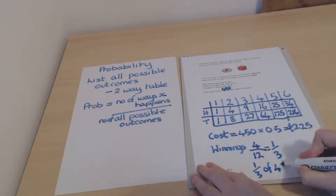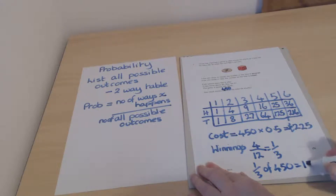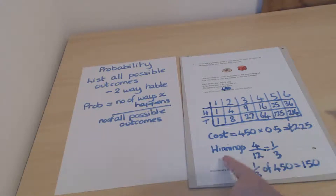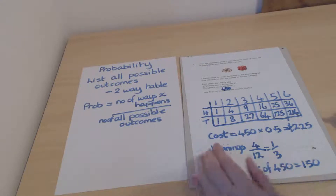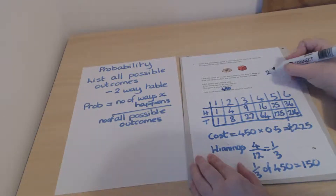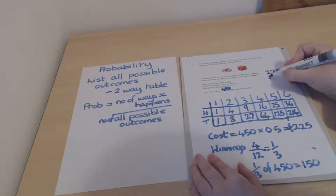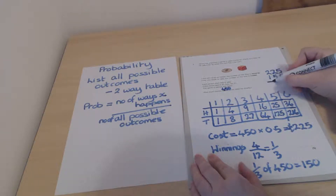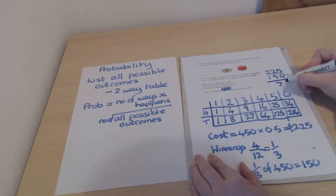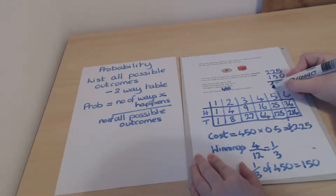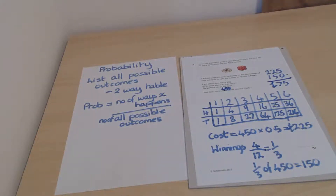One third of 450 is 150, so 150 people win. Each winner receives £1, so total winnings paid out = £150. Subtracting from income: £225 − £150 = £75 raised. So there's a one in three chance of winning, meaning they don't actually raise a huge amount of money.